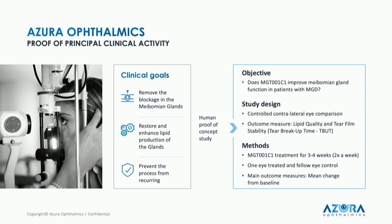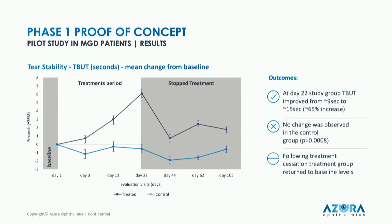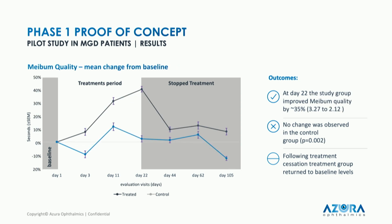Our first approach was a small proof of concept study using a non-ophthalmic formulation to see whether we could move any of the regulatory endpoints. We saw a six-second improvement in tear breakup time after 22 days of bi-weekly administration in the physician's office, along with a corresponding improvement in meibum quality. Because many agents don't address the fundamental underlying hyperkeratosis, we wanted to confirm our drug replicated what is known from dermatological use. As you can see, once treatment is stopped, the effect returns to baseline.